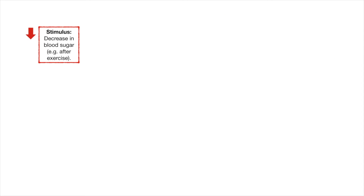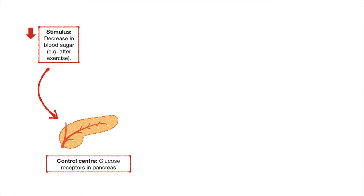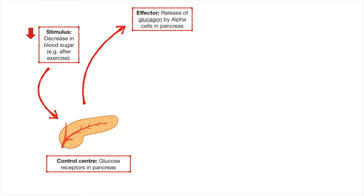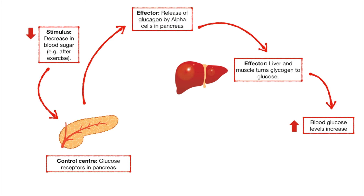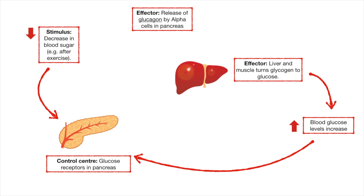On the other hand, when blood glucose levels go down — after exercise or if it's been too long after a meal — the pancreas will detect there is not enough sugar in the bloodstream. It will stimulate the release of glucagon by the alpha cells, which will go to the liver and stimulate the production of glucose from glycogen. The breakdown of glycogen into glucose in both the liver and muscle cells will release glucose into the blood, increasing blood glucose levels, and in a negative feedback response, send a signal to the pancreas to stop producing glucagon.